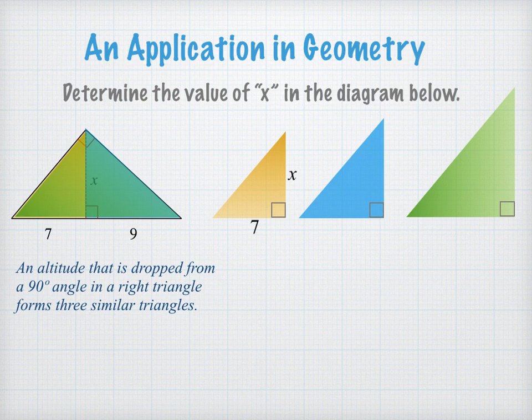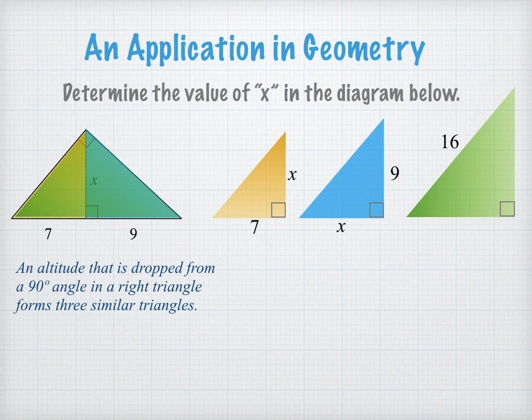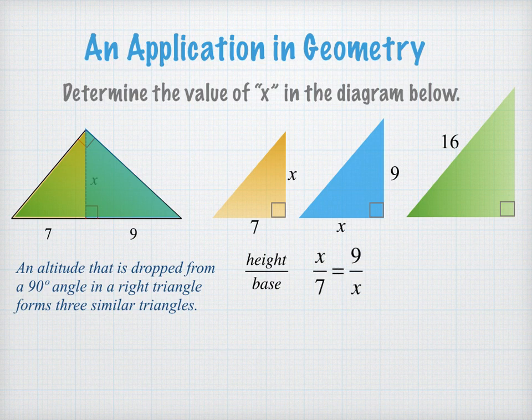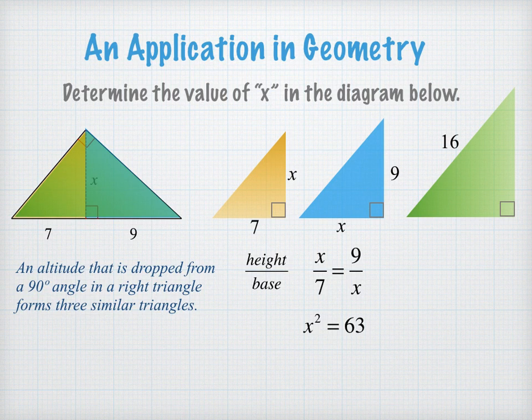In the yellow triangle we have a height of x and a base of 7. In the blue, we have a height of 9 and a base of x. In the green triangle we know the hypotenuse is 16 because of the segment addition postulate. I want to look at the yellow and blue triangles — the two smaller right triangles — and write a proportion that shows height over base. Because these triangles are similar, the ratios of height over base will be equal. So I have a proportion, and in a proportion, cross products are equal. So x times x equals 9 times 7, or 63.